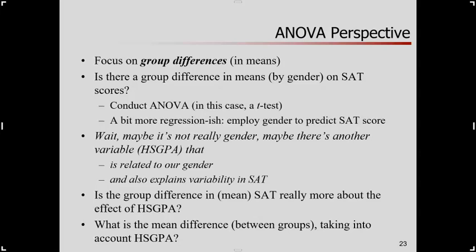So if all we cared about was whether there's a group difference, that's all we would do. But in ANOVA, somebody raises their hand in the back of the room and says, wait — it's not really gender, the grouping variable, that you're paying attention to. Maybe there's another variable really driving things, like high school GPA, that's related to the grouping variable but also explains variance in the outcome. So is the group difference in mean SAT scores really about the groups, or is it really about the effect of high school GPA?